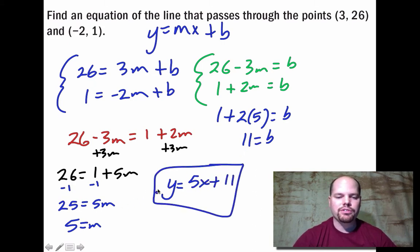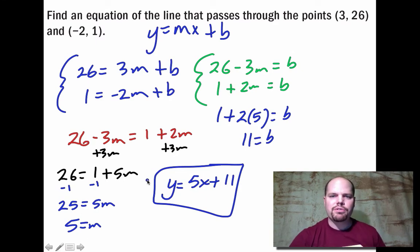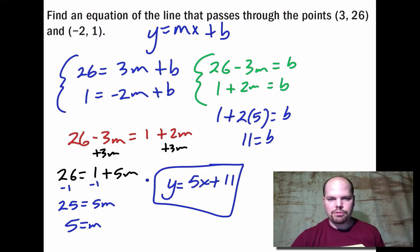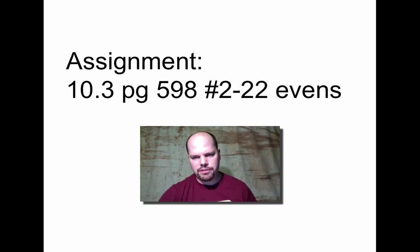Checking: 5(3) + 11 = 26 ✓ and 5(-2) + 11 = 1 ✓. This is a unique way to find a line's equation through two points using a system of equations rather than the traditional slope formula. Your assignment is 10-3, page 598, problems 2 to 22 evens. Thanks for tuning in.